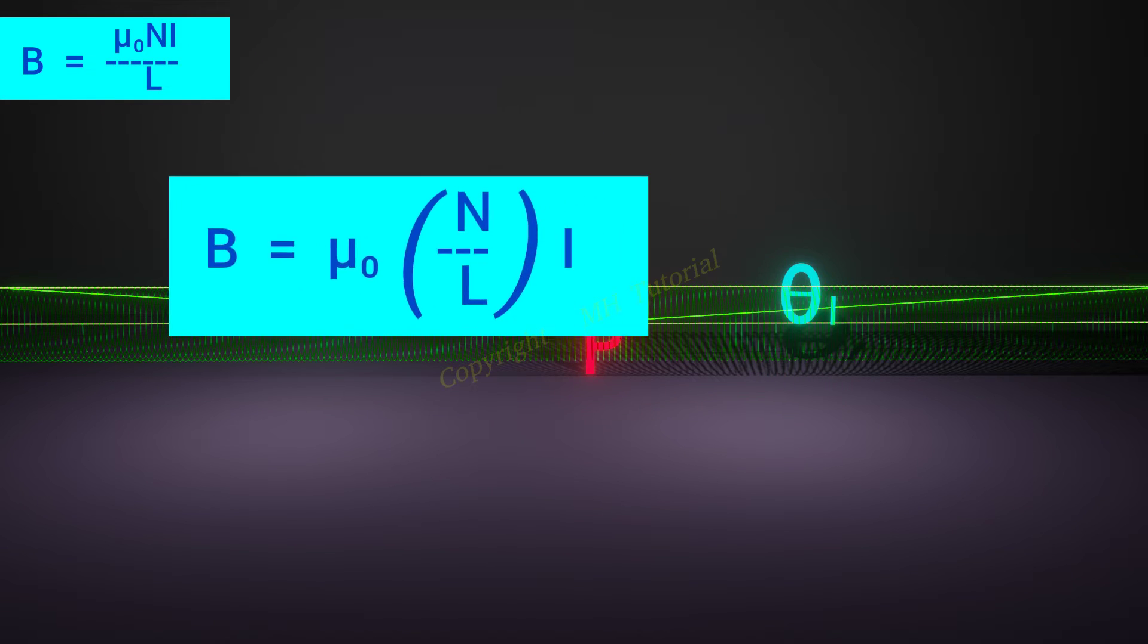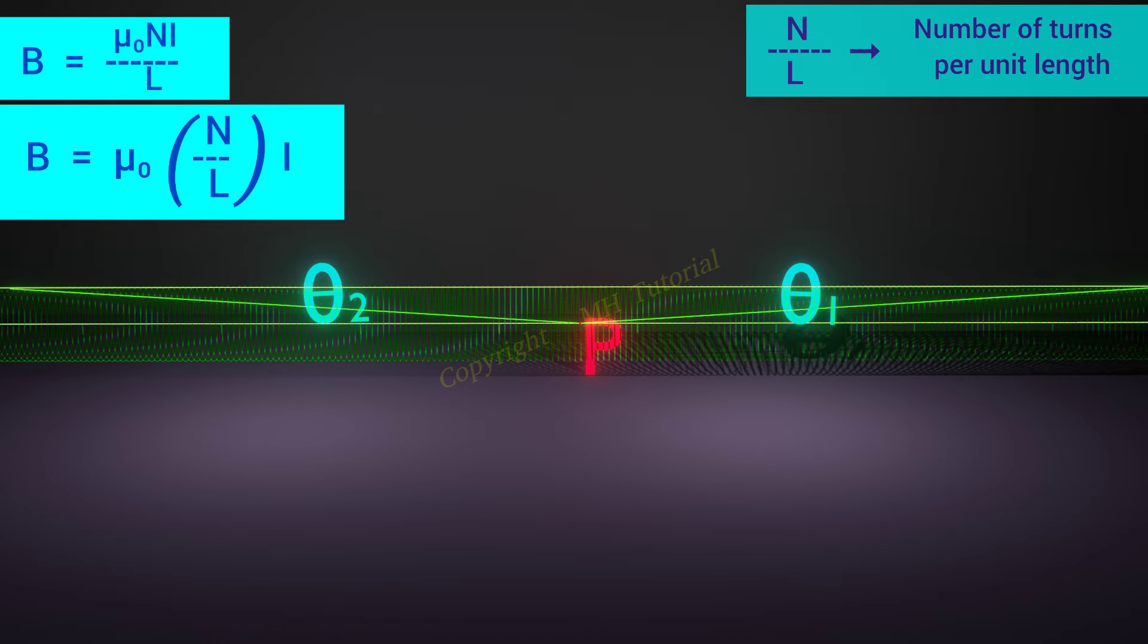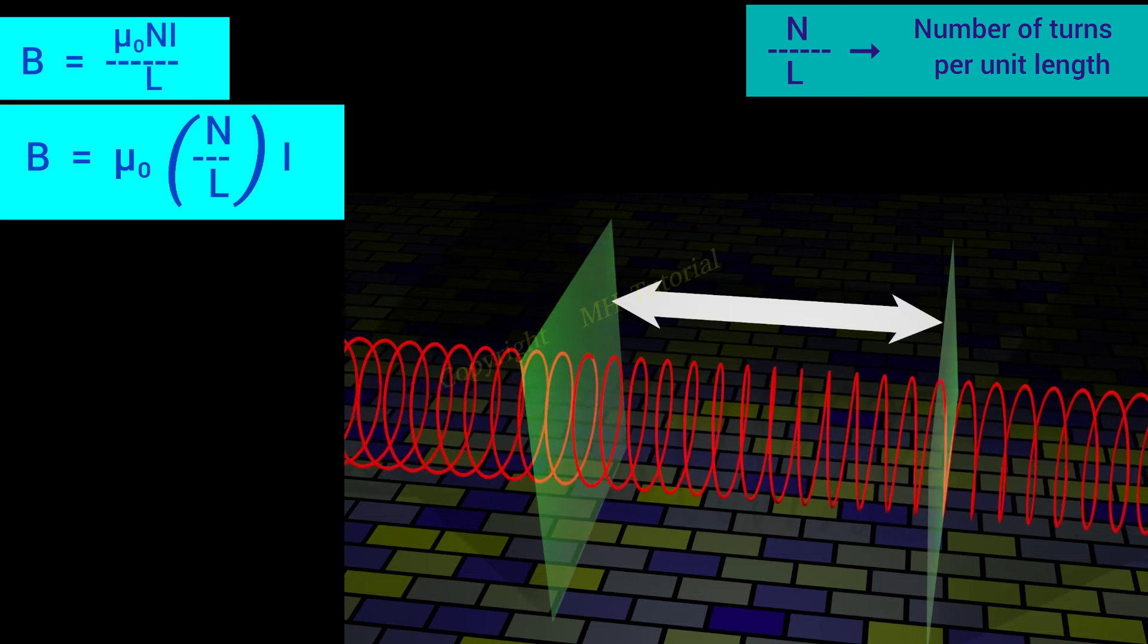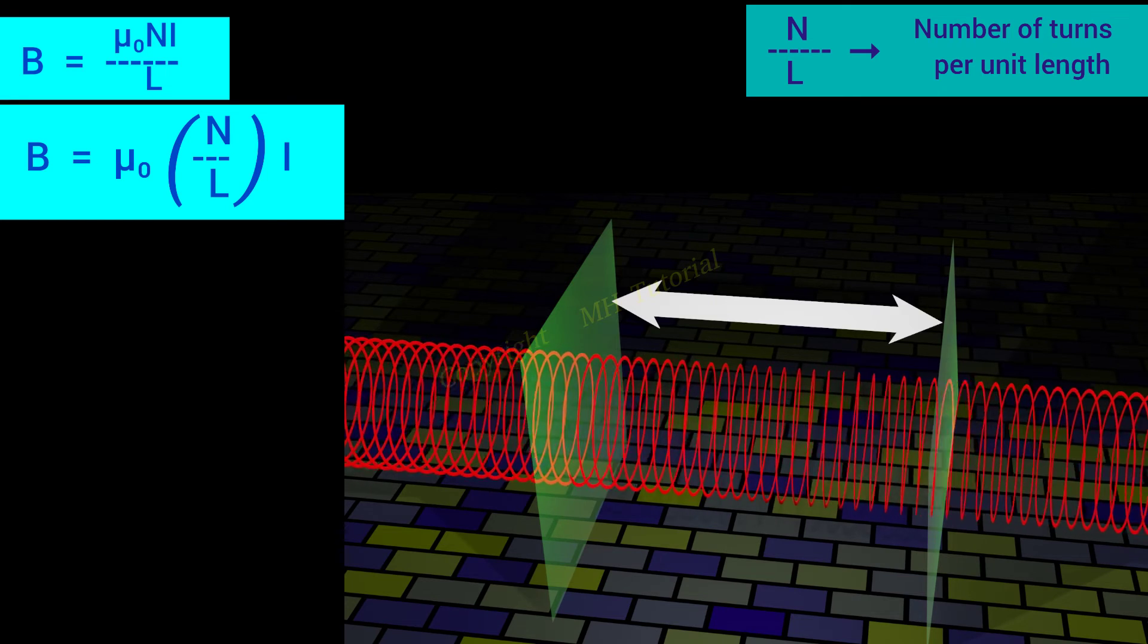Here, the term n divided by L is the number of turn in unit length. Hence, to increase magnetic power, one should increase the number of turn per unit length.